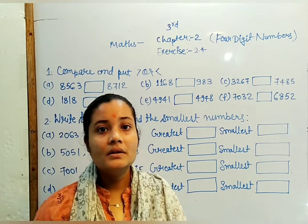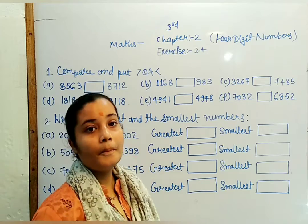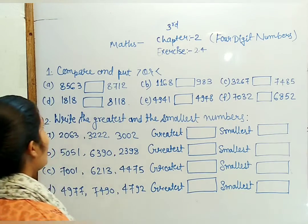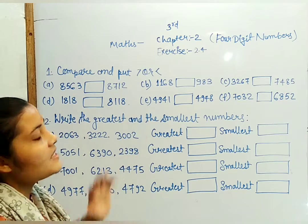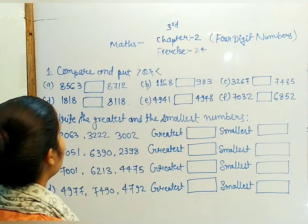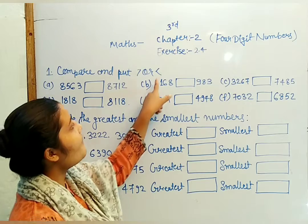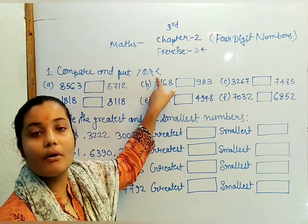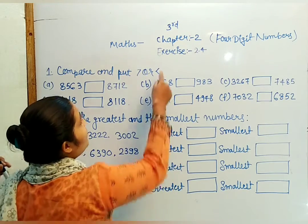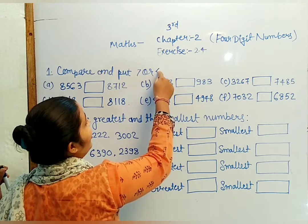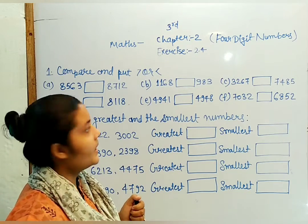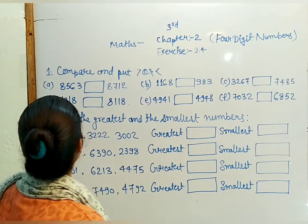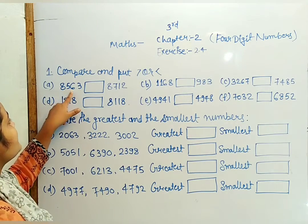Math subject exercise 2.4. We will compare what is greater and smallest. Now if you look at greater and smallest, you will see a sign, a symbol. If you look at greater number, then you will see this symbol. Now if you look at 8,563 and 8,712. Now what is greater?